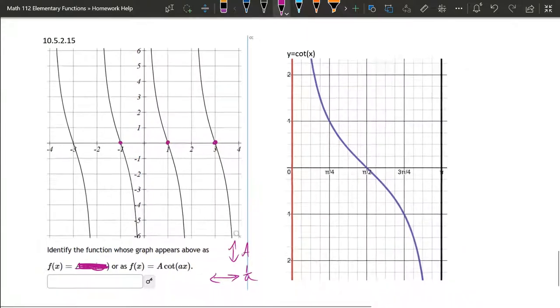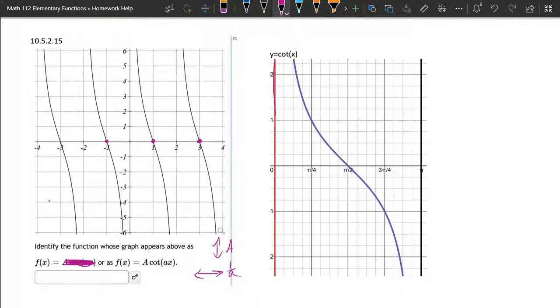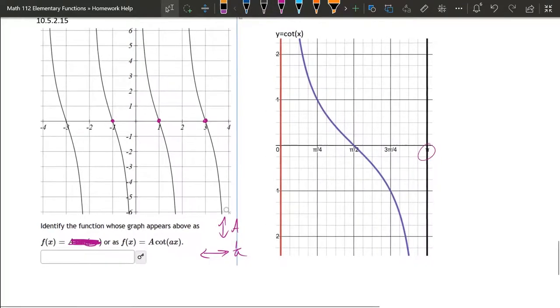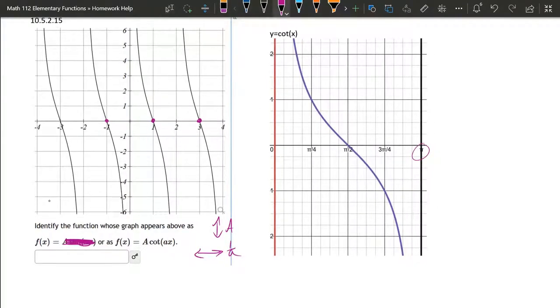Now on this cotangent graph, you have to be careful. This vertical asymptote is also the y-axis. This vertical asymptote is at pi. So the period that is graphed in blue is this period right here. That's the period that's in the graph to the right.